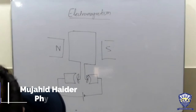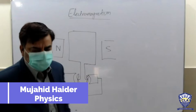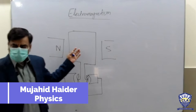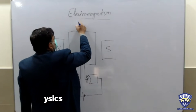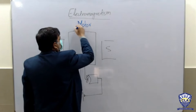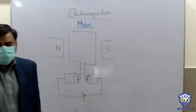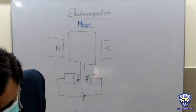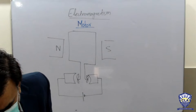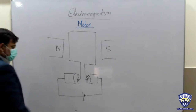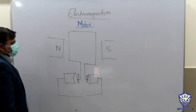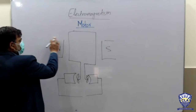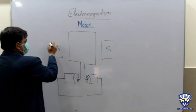Yesterday we discussed that we have DC motors and AC motors. We actually did the topic of motors, so what do you expect — is it a DC or AC? It's a DC motor. For AC we need to have slip rings instead of split rings, and AC current supply.